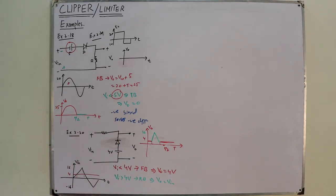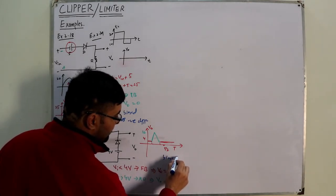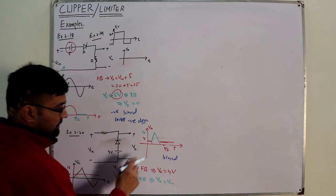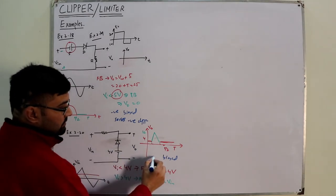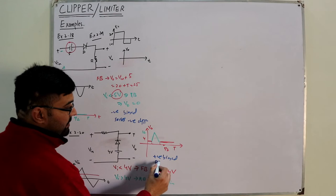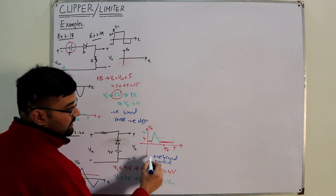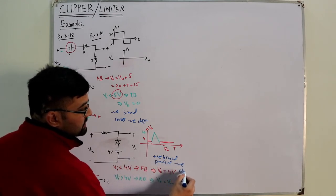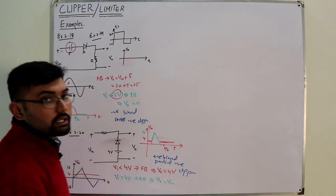Now let's name the circuit. This is biased, with a reference voltage of 4 volts, positive polarity — so this is a positive biased parallel clipper. It is also a negative clipper because it has clipped below a certain region.